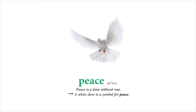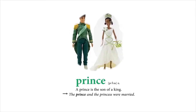Peace. Peace is a time without war. A white dove is a symbol for peace. Prince. A prince is the son of a king. The prince and the princess were married.